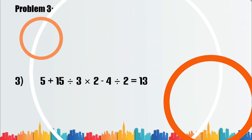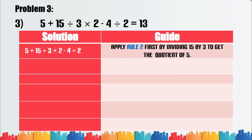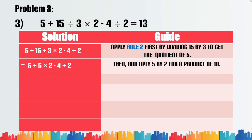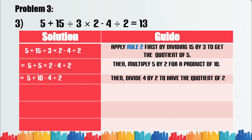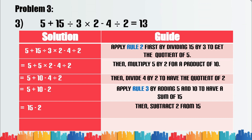Problem number three: 5 plus 15 divided by 3 times 2 minus 4 divided by 2 equals 13. Apply rule 2 first by dividing 15 by 3 to get the quotient of 5. Then multiply 5 by 2 for a product of 10. Then divide 4 by 2 to get the quotient of 2. Apply rule 3 by adding 5 and 10 to get a sum of 15. Then subtract 2 from 15. The difference is 13.